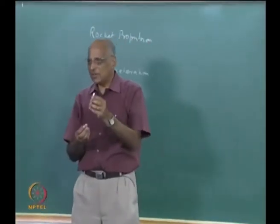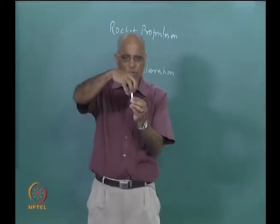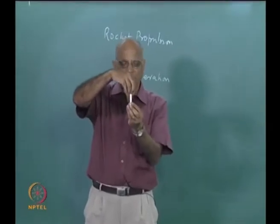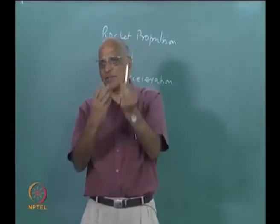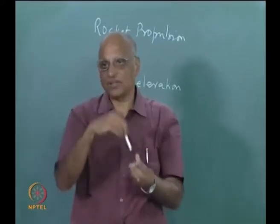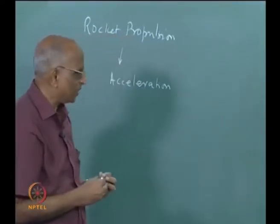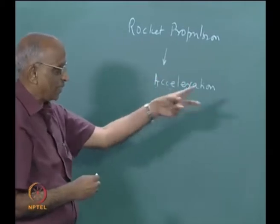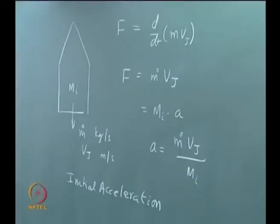The initial acceleration should be equal to the force divided by the initial mass. That means acceleration equals m_dot times v_j divided by the initial mass. As I keep adding more and more mass to the rocket, the initial mass increases and it becomes impossible to take it up. Acceleration is also important — if human beings are sitting in a rocket, it cannot take off at very high acceleration. Therefore, there has to be some control on acceleration.